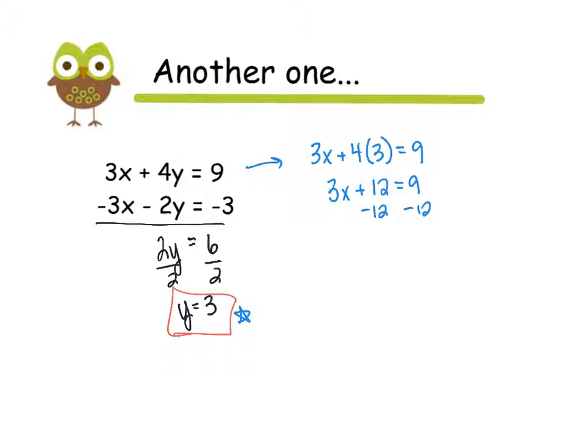I need to subtract 12 from both sides. So 3x equals a negative 3. Divide both sides by 3. I'll have x equals a negative 1.